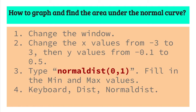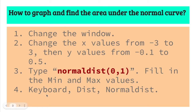First, change the window. Since the normal distribution ranges from negative 3 to positive 3, we have to change the X value. For the Y value, set it from negative 0.1 to 0.5. You can type normal distribution with mean 0 and standard deviation 1 to fill in the minimum and maximum values. Or you can use the keyboard to find the distribution option.